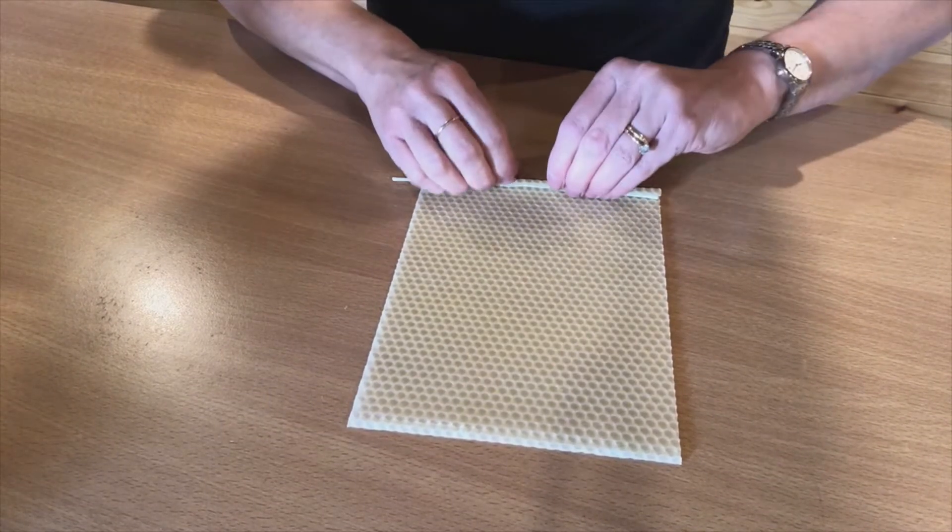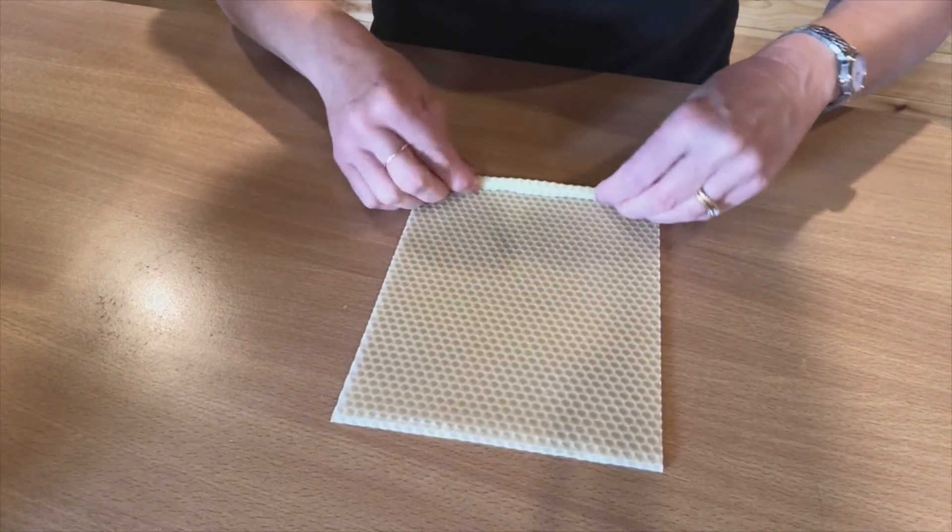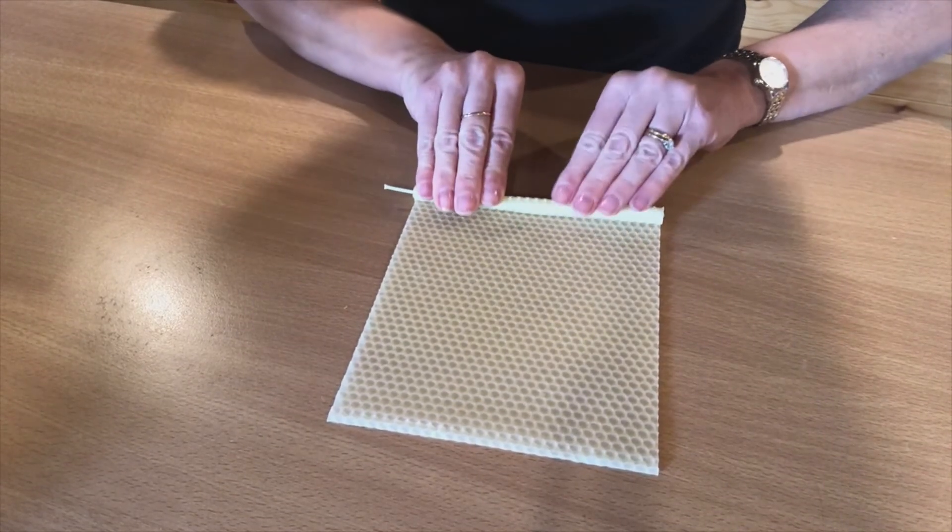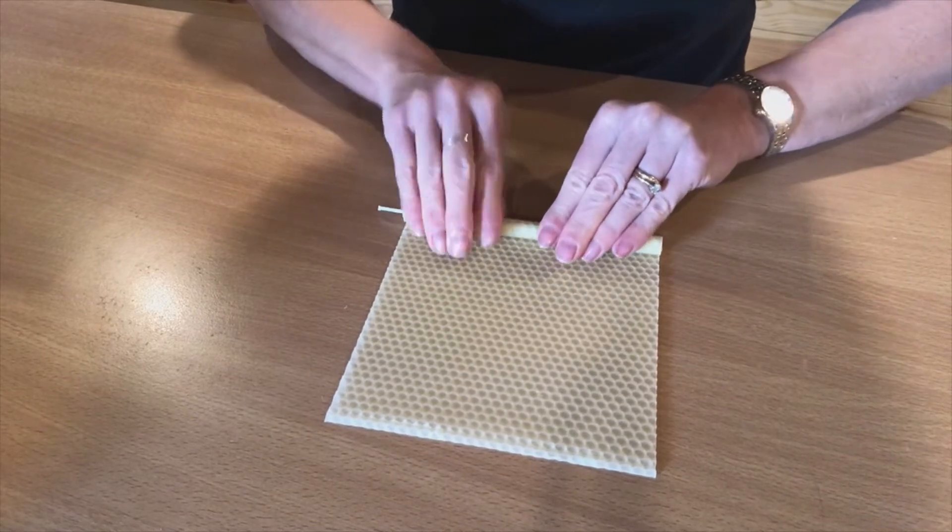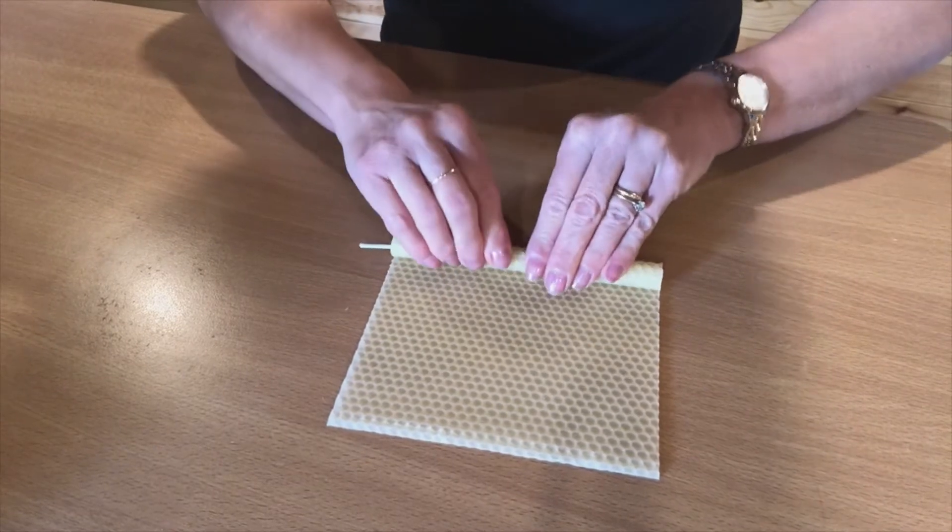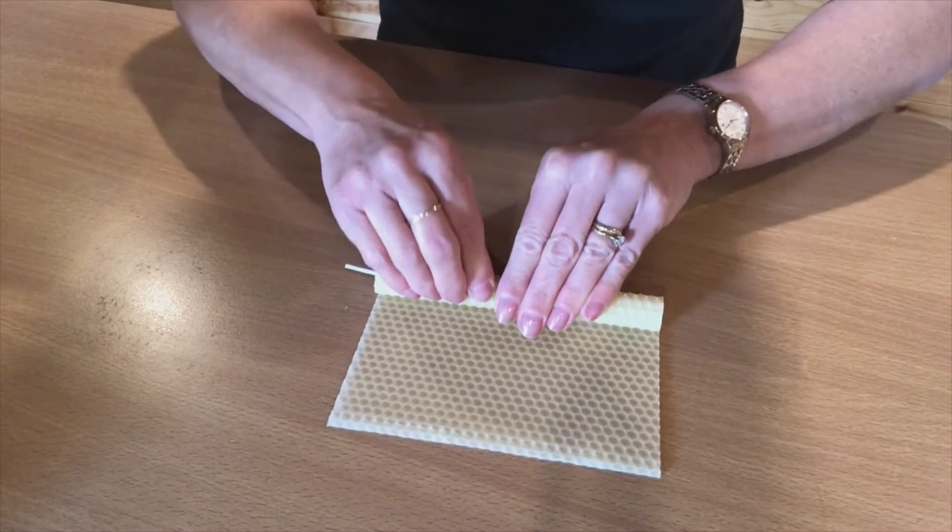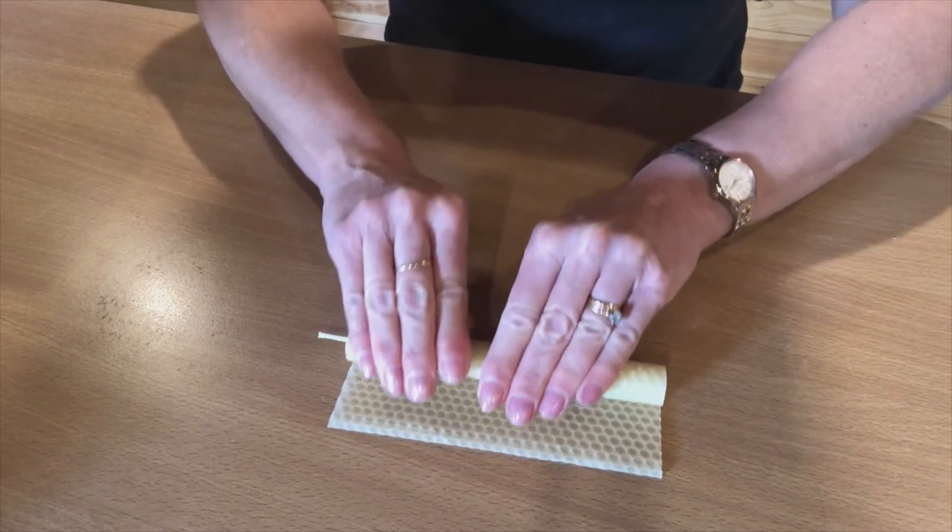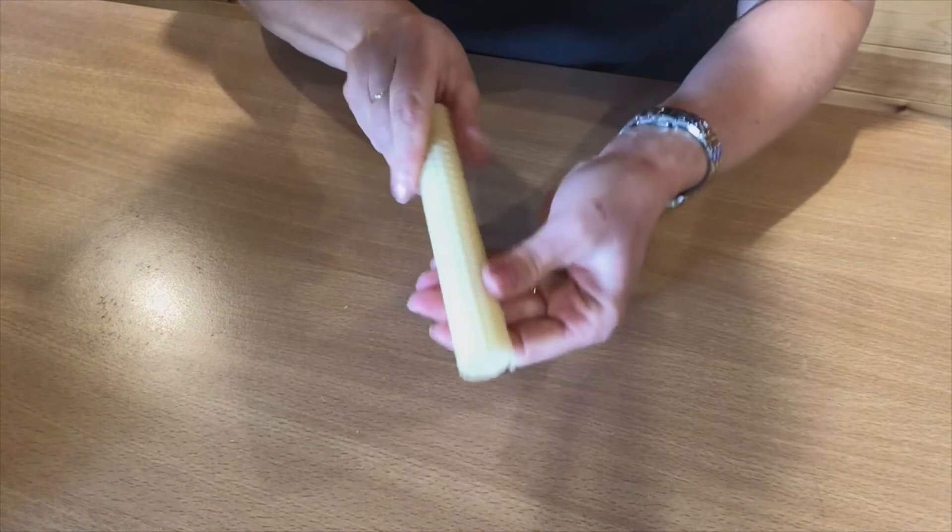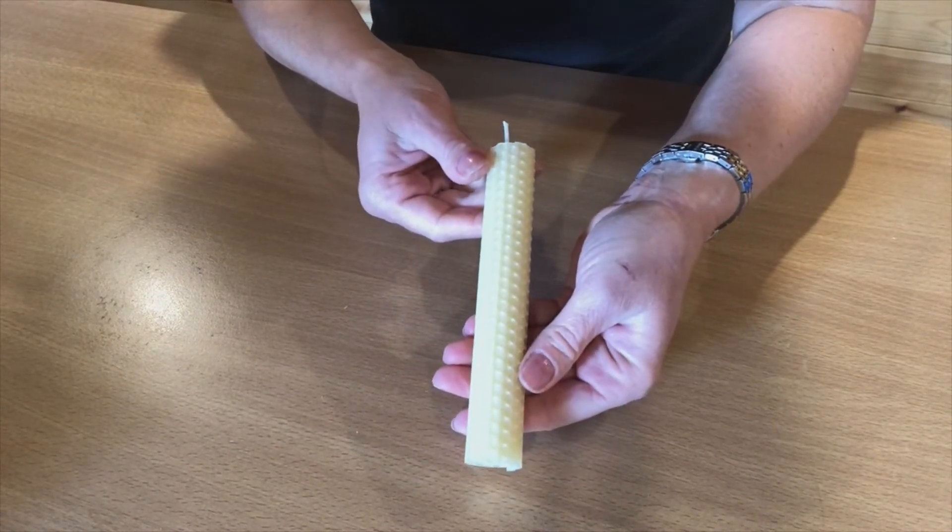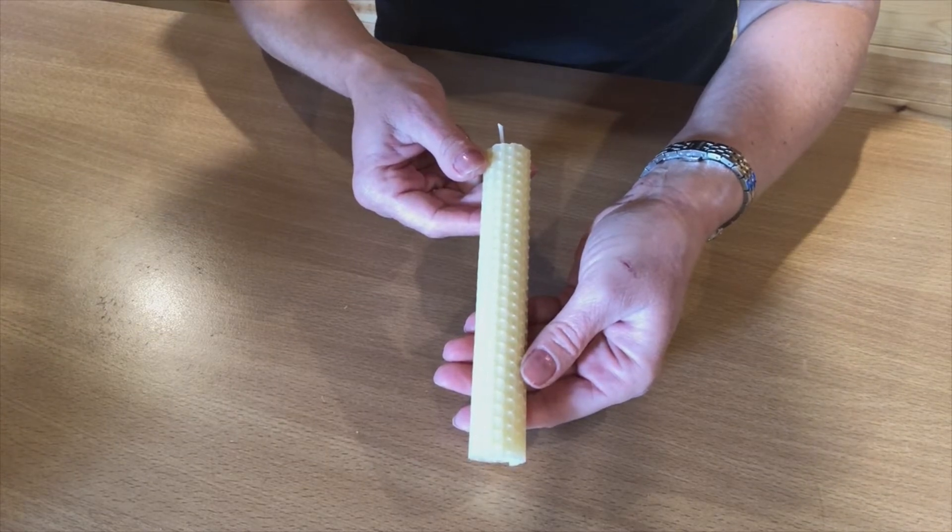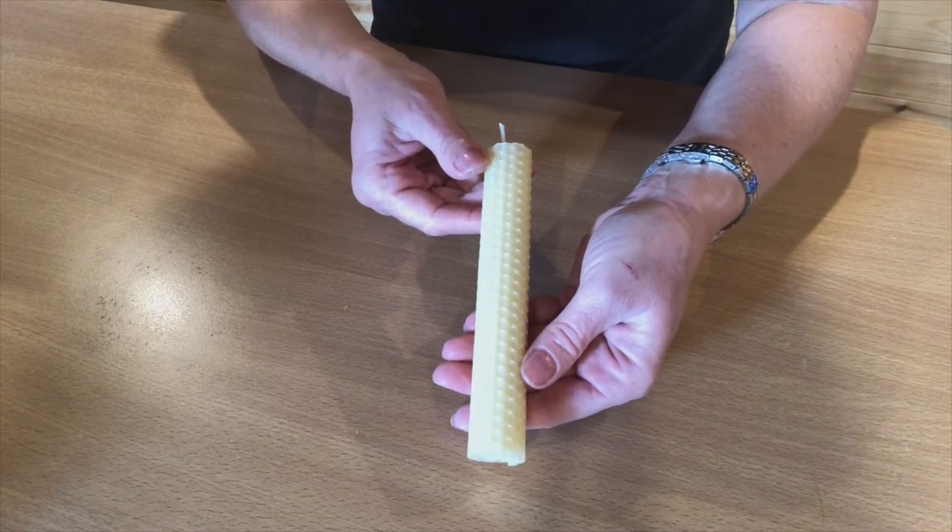You're then going to repeat this action and as you get going it becomes more of a roll than a fold. Keep rolling, trying to keep it as tight as possible all the way to the end and you end up with a straight candle. You have three rectangles to make these candles in three different colors.